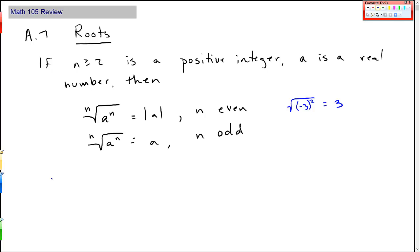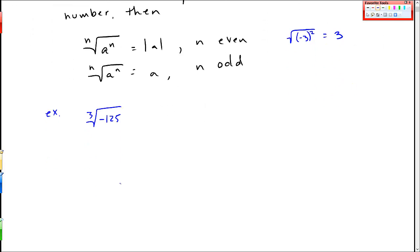A couple examples. The cube root of negative 125. Simplifying these roots goes back to finding prime factorizations. For example, maybe you can identify that 125 is negative 5 cubed. This is an odd root, so this should just be negative 5 simplified.